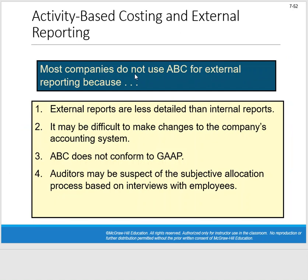Activity-based costing and external reporting — they don't mix. Most companies do not use ABC for external reporting; really, companies simply do not use ABC for external reporting. External reports are going to be less detailed than internal reports — the amount of data ABC provides is really meant for internal consumption. The company needs to have a traditional costing system for external financial statements. ABC is something in addition to, not a replacement for — it's a supplement. And critically, ABC does not conform to GAAP, so we're not going to be using it for financial reporting.